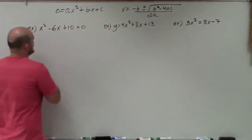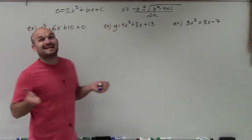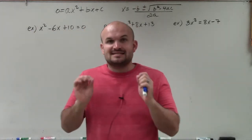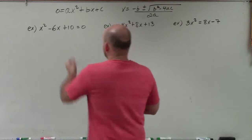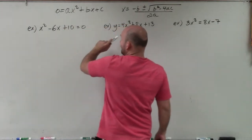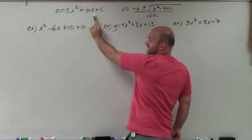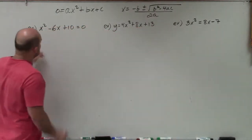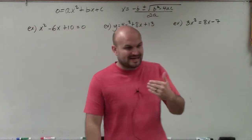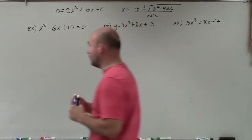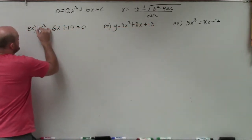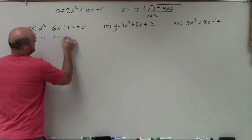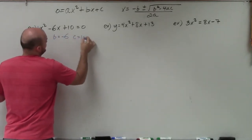In the first example, I made this one pretty simple — you can see that it's already set equal to 0. The next thing I like to do is identify our a, b, and c, where a is the coefficient of x squared (our quadratic term), b is the coefficient of x (our linear term), and c is our constant. When there's no number in front of the x squared, we know that number is going to be 1. So therefore, a equals 1, b equals negative 6, and c equals 10.